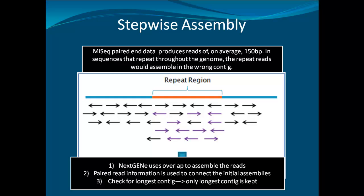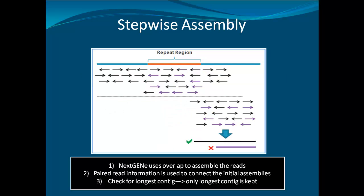The Illumina MiSeq sequencing system currently produces paired-end reads of about 150 base pair. In sequences that repeat, these short reads could assemble in the wrong contig, causing loss of coverage in other parts of the genome, and contigs that terminate at repeat regions due to ambiguous contigs.